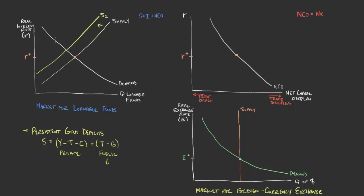That's going to shift us to this new equilibrium point. We would reduce the quantity of loanable funds in the domestic market, and as a result, we would move to this new, higher equilibrium real interest rate. If we cross this over, we can see the new level of the equilibrium real interest rate.